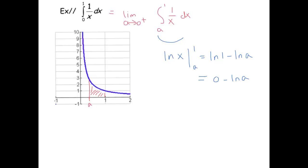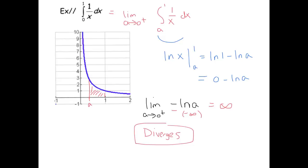That equals zero minus ln of a. Now we take the limit as a goes to zero from the right of negative ln of a. As a goes to zero from the right, the natural log graph goes down towards negative infinity. So we're taking the opposite of negative infinity, which is infinity. So it diverges. One over x happens to be too fat in both directions — it sums to infinity as x goes to infinity, and the integral from zero to one also diverges. Both areas blow up to infinity.